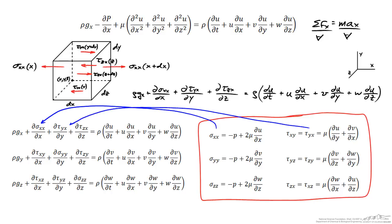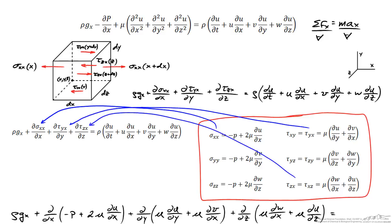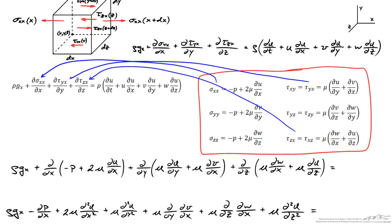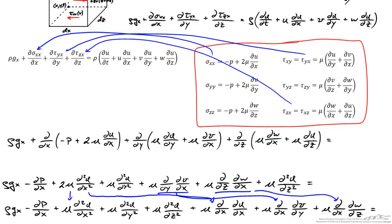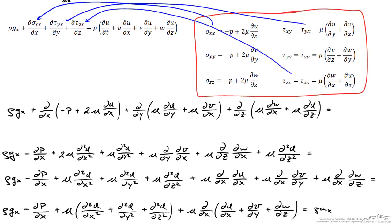Accepting the constitutive relations as true, it becomes a series of algebraic manipulations to arrive at the Navier-Stokes equation. The first substitution gives an expression on the left hand side. Differentiating the three terms and performing additional manipulations — splitting a term into two parts and switching the order of differentiation — leads to a further simplified expression. Notably, the sum (∂u/∂x + ∂v/∂y + ∂w/∂z) equals zero by the continuity equation, so that entire term vanishes for an incompressible fluid.